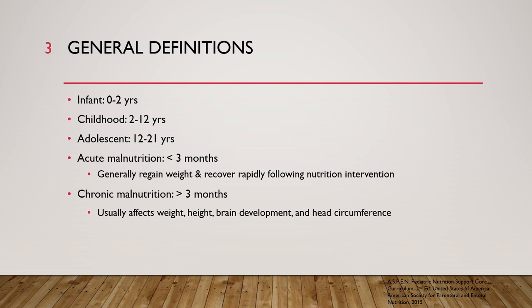Before we get started, let's go over a few general pediatric and nutrition definitions. Pediatrics are split into different age categories: infant is 0 to 2 years old, childhood is 2 to 12 years old, and adolescent is 12 to 21 years old. Adolescents generally can begin to tolerate adult formulas. For malnutrition, acute malnutrition is defined as less than three months duration, and these patients can regain weight relatively quickly. Chronic malnutrition is greater than three months and may have more severe consequences affecting weight, height, brain development, and head circumference.